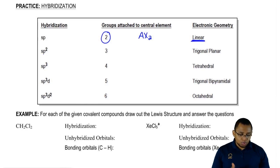If your hybridization is sp2, then your central element is connected to three groups. If it's sp3, it's four groups. sp3d, five groups. sp3d2, six groups.